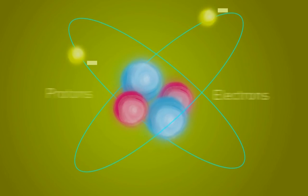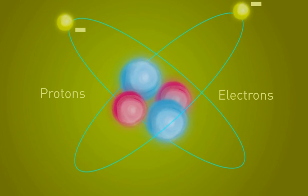Electrons and protons attract each other, so atoms usually have an equal number of the two particles.